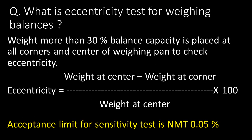For the eccentricity test, a weight of more than 30 percent of the weighing balance capacity is placed at all corners and the center of the weighing pan. It can be calculated using the given formula, and the acceptance limit as per USP is not more than 0.05 percent.